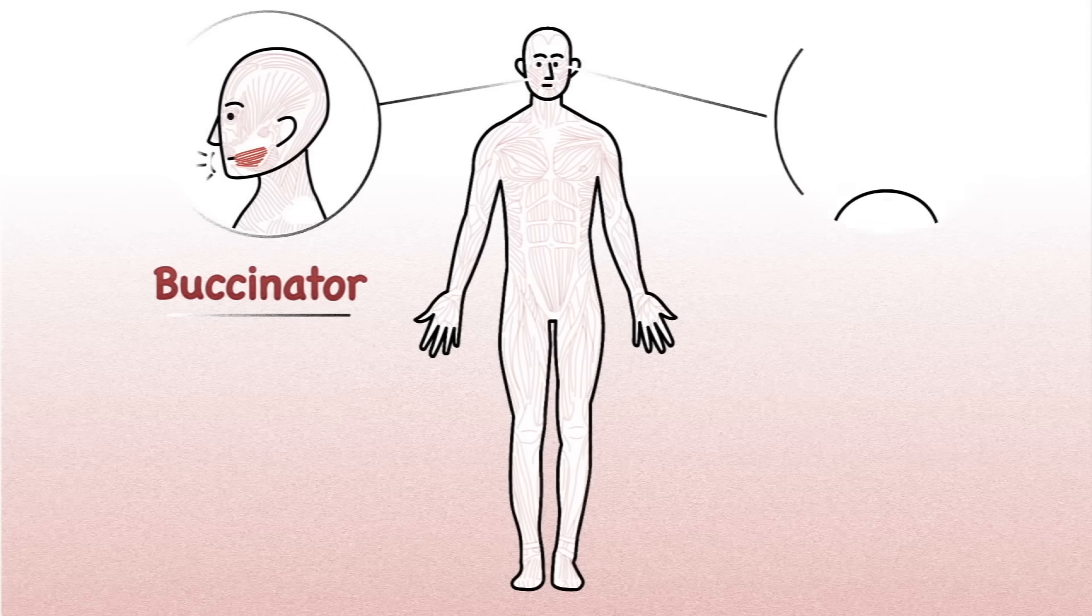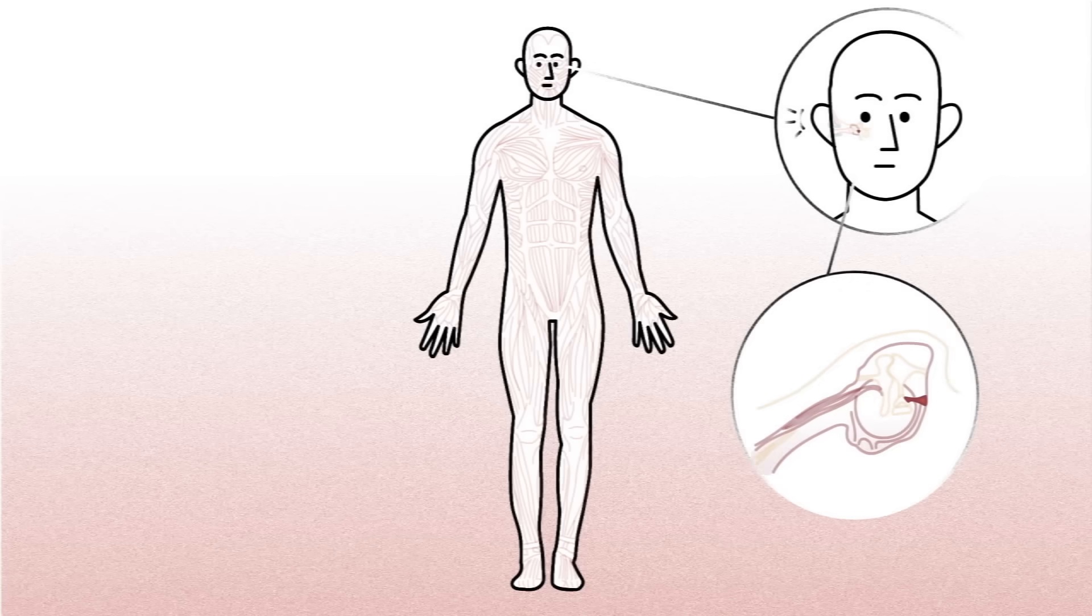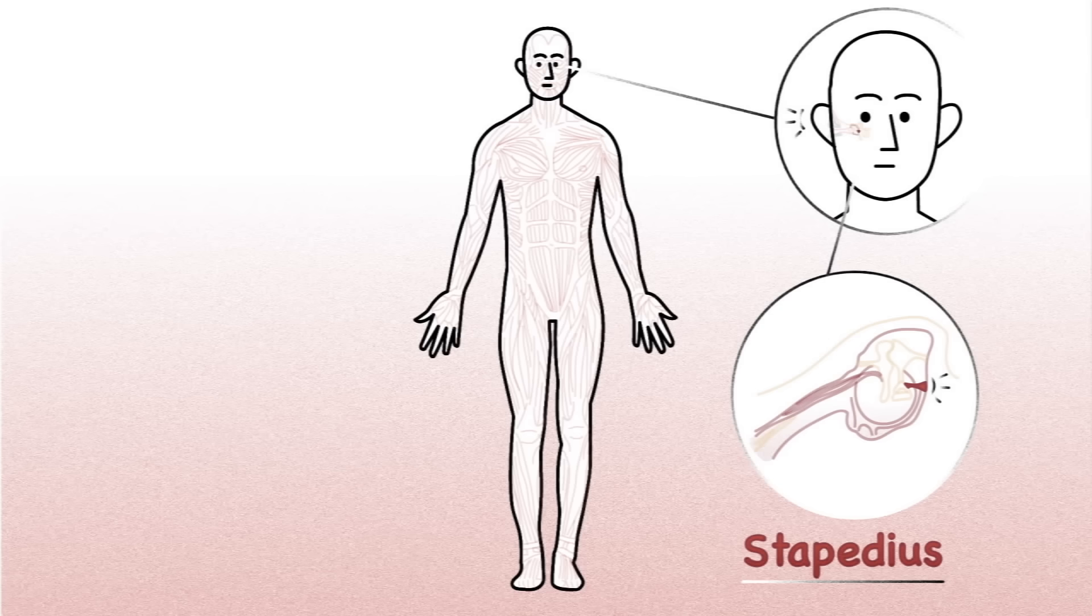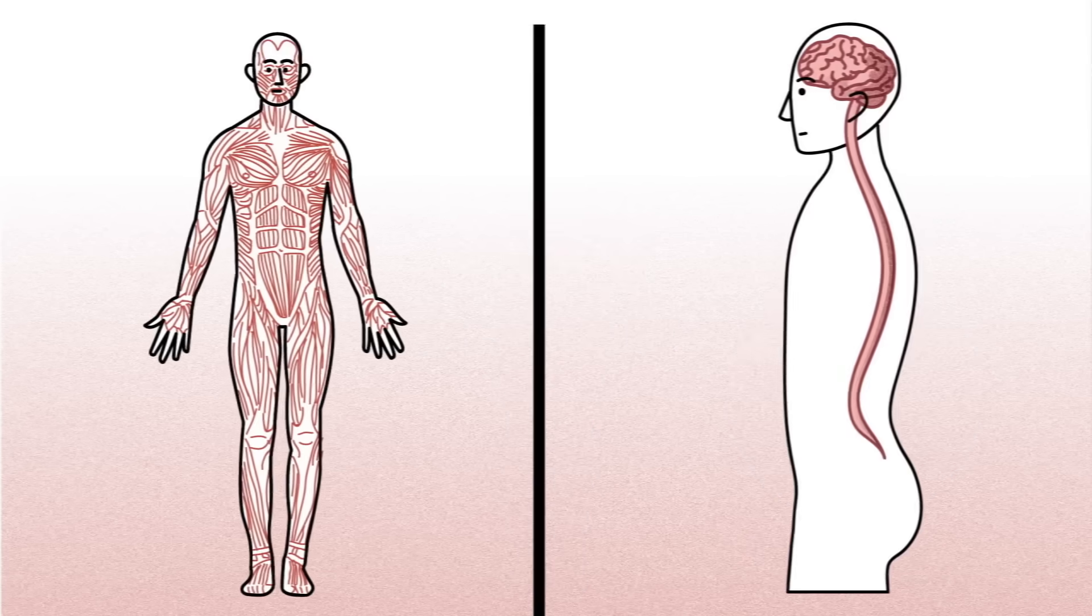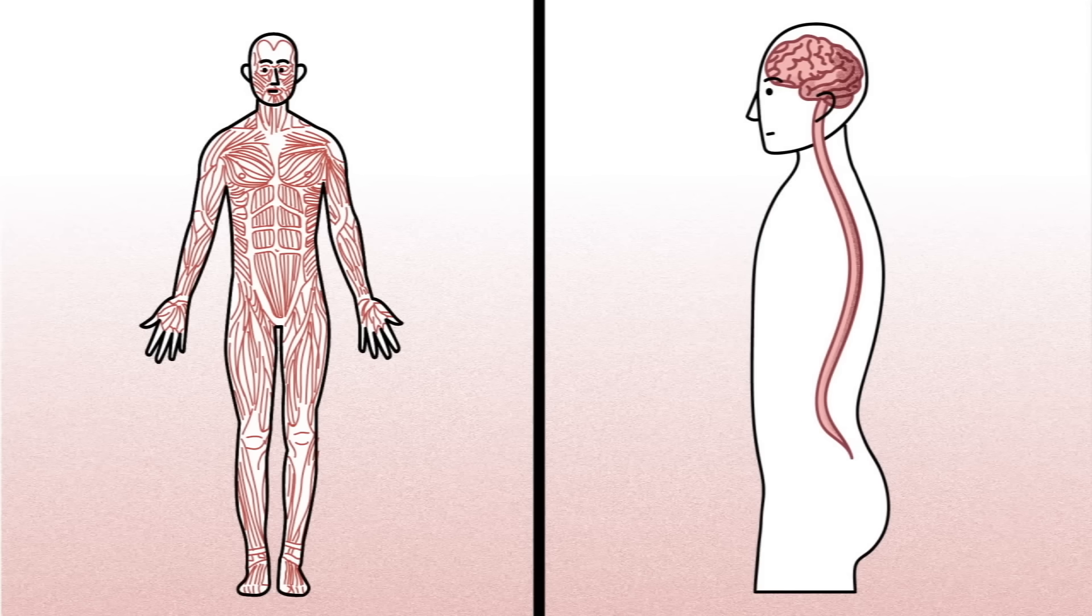Or the body's tiniest skeletal muscle, a one-millimeter-long tissue fragment called the stapedius that's nestled deep inside the ear. Wherever they occur, skeletal muscles are connected to the somatic nervous system, which gives us almost complete control over their movements.